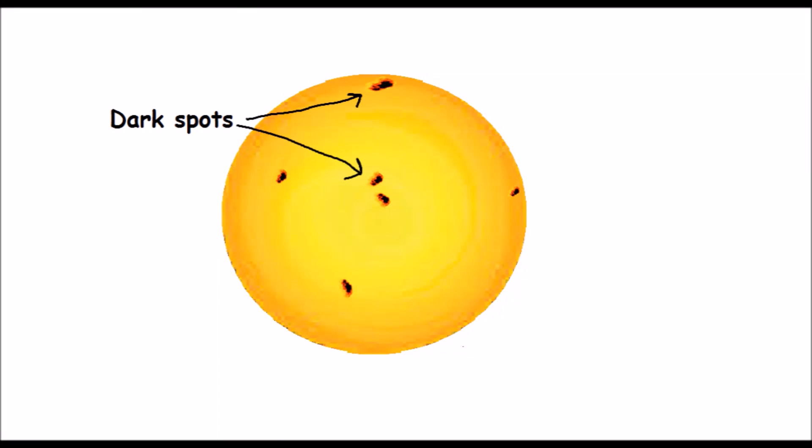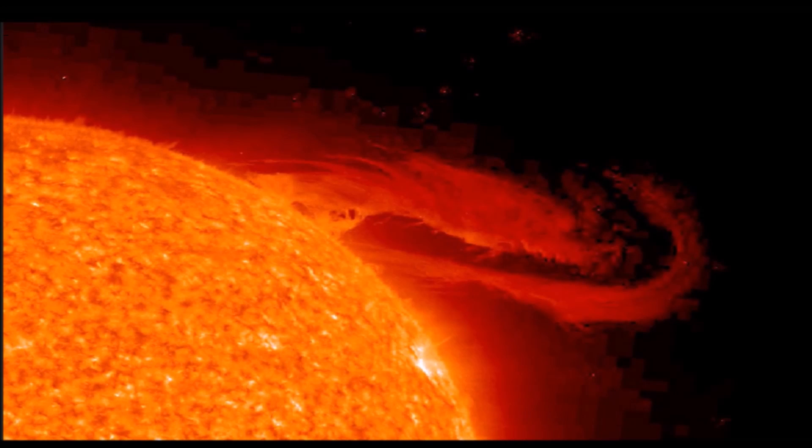There are dark areas called sunspots on the outer layer. Temperature is cooler in these areas. Solar flares are sudden bursts of burning gases and often happen near sunspots.